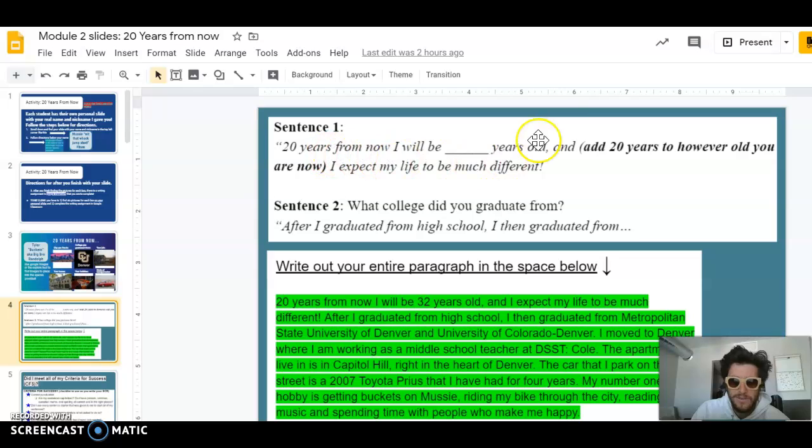I'm not just typing in 32 right here. I'm going to type it out where I have my space to write the entire paragraph. So first sentence: 20 years from now I'll be 32 years old and I expect my life to be much different. That's my first sentence.